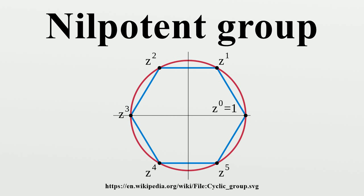The direct product of two nilpotent groups is nilpotent. Conversely, every finite nilpotent group is the direct product of p-groups.